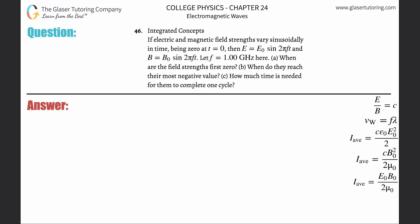Number 46, integrated concepts. If electric and magnetic field strengths vary sinusoidally in time beginning zero at t equals zero when E is this thing and B is this thing, let the frequency be one gigahertz. When are the field strengths first zero?